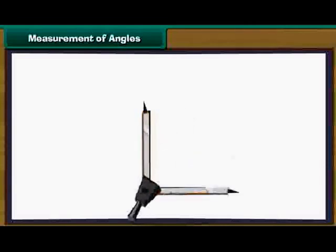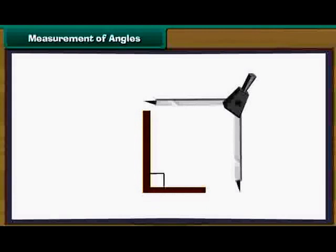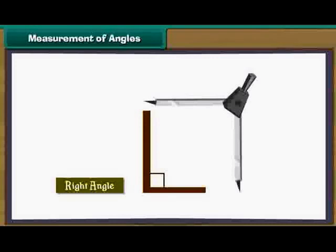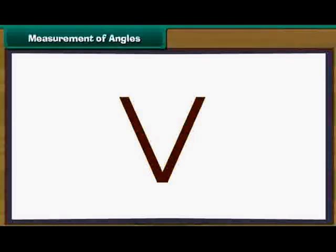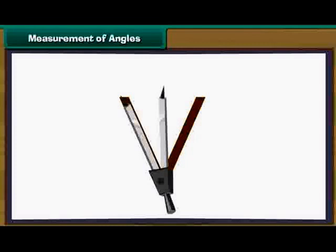Write letter V of the English alphabet. Place the divider on V such that one of its arms and common point coincide with one of the arms and common point of V. What do you see? The other arm of the divider lies to the left of the other arm of V. It means that V makes an angle, an acute angle, which is smaller than the right angle.